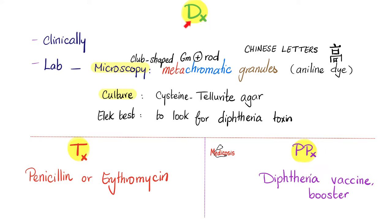How can we diagnose diphtheria? Clinically is more important than labs — by observing signs and symptoms you can suspect diphtheria and start treatment immediately. Lab-wise: microscopy shows metachromatic granules and pleomorphic club-shaped rods arranged in Chinese letters. You can culture diphtheria using cysteine tellurite agar and use the ELEK test to detect the diphtheria toxin. Treatment is penicillin or erythromycin; these antibiotics destroy the bacteria and decrease exotoxin production. To neutralize the toxin use antitoxin; for prophylaxis, the vaccine and booster are very effective.